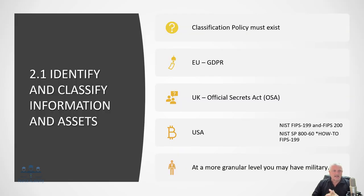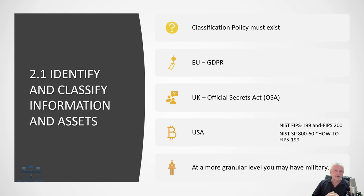Section 2.1 covers identification and classification of information assets. A classification policy must exist in your organization. From the EU, the GDPR — specifically Section 33 — states that if you have a breach, you have 72 hours to disclose it. There's also the UK Official Secrets Act, and in the USA, FIPS 199 and 200, and NIST SP 800-60 as the how-to application of FIPS 199. At a more granular level, there may also be military requirements.